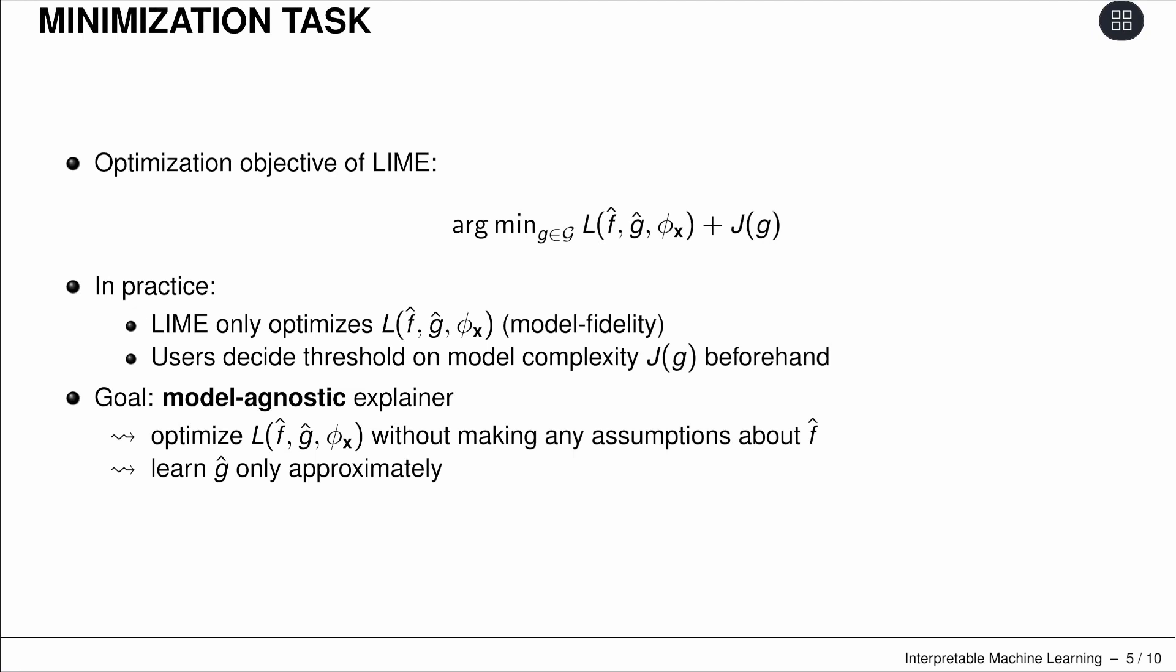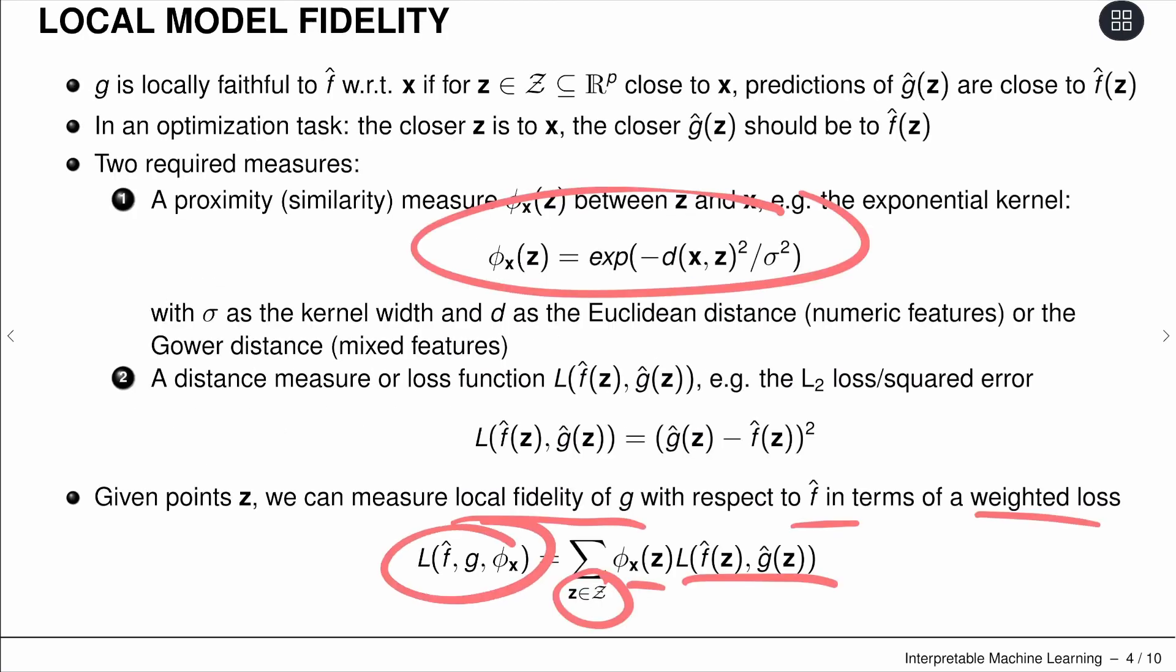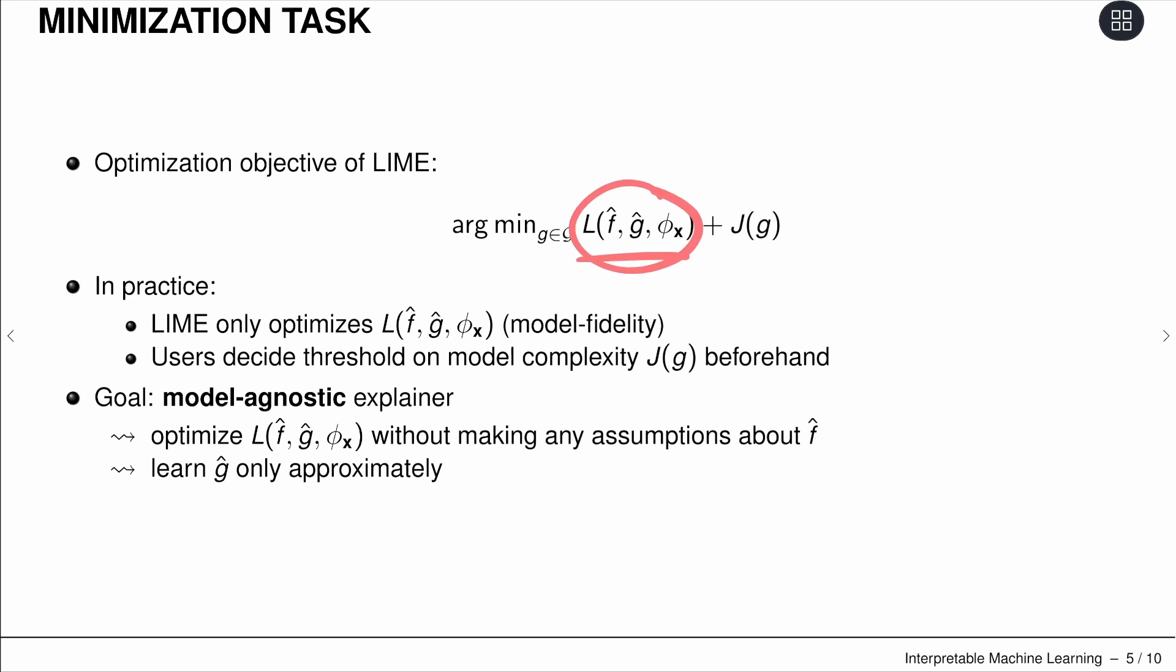The optimization objective of LIME is we'd like to minimize that loss and also minimize the complexity. In practice, LIME is only optimizing the model fidelity and not optimizing complexity directly. The user can decide on the model complexity beforehand, limiting the model class and what is possible for G.